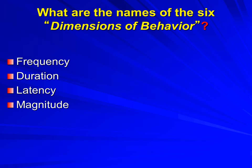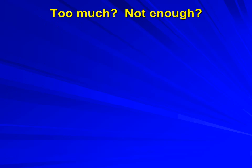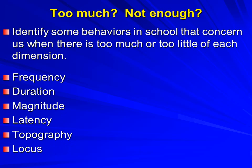A behavior can vary in the force or power with which it is exhibited. Perhaps we're concerned about the locus — the location of the behavior, where it was displayed in the environment or where on the body. We might be concerned with the topography of the behavior — the form or the shape that it takes. Come up with actions seen in the academic setting that are of concern to educational personnel, with examples for each of the six dimensions. For frequency, think: what behaviors concern us because they don't happen often enough or they happen too often? Pause the video at this point.